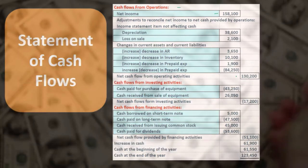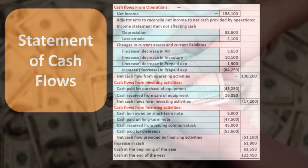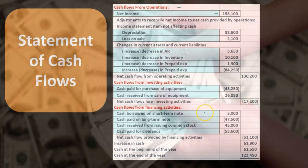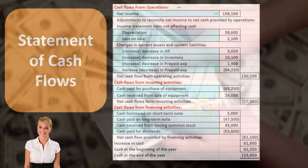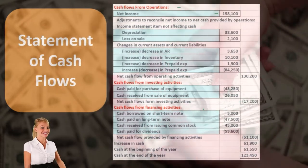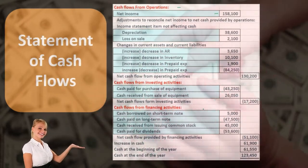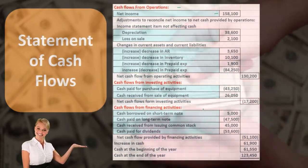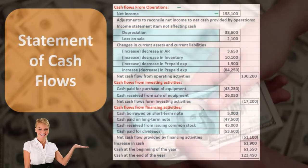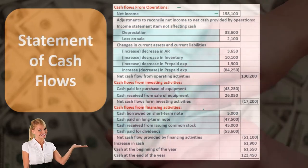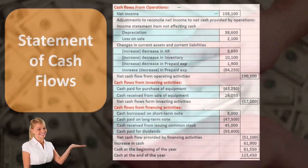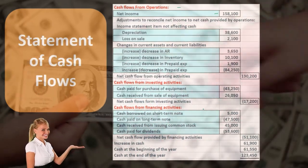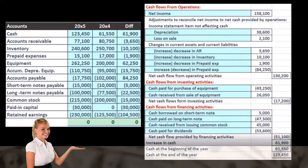The other two sections of the cash flow statement are cash flows from investing activities and cash flows from financing activities. These do not change whether we use the direct method or the indirect method — they remain the same, representing cash flows related to those two activities.